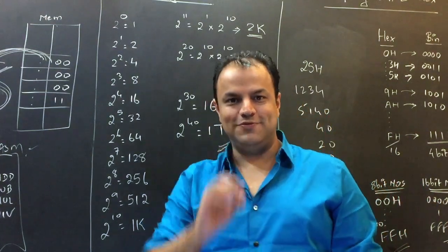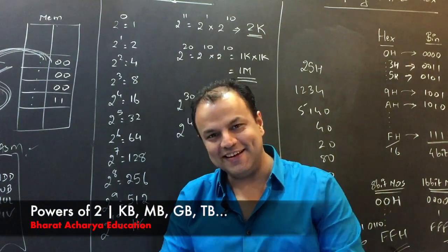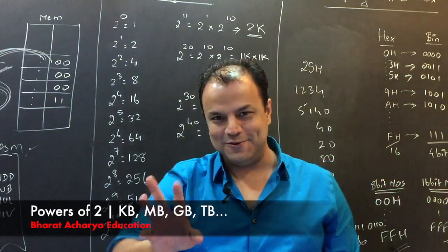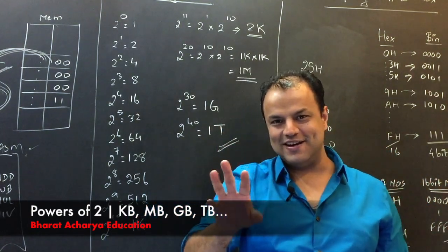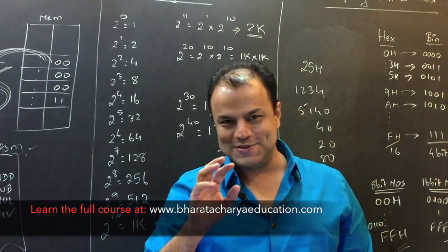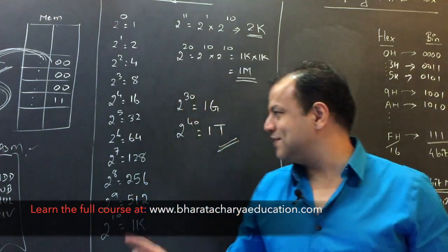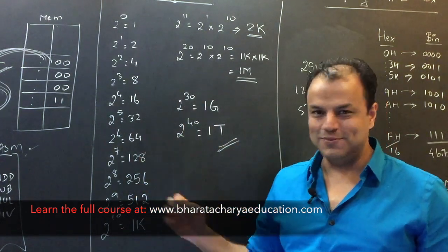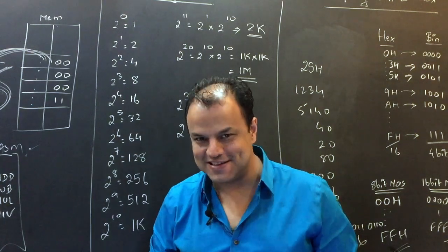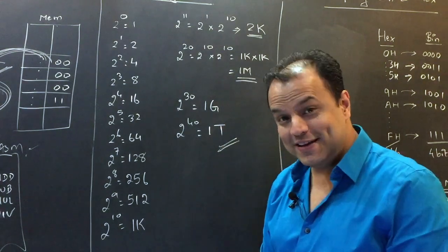Two raised to 12 is four K. Two raised to 13, eight K. Two raised to 16. If you learned a little bit of microprocessors here and there, you will now start coming across numbers that you've been seeing in the books all the time. Two raised to 16 is 64 K. You just have to tell me a K next to all these numbers. Two raised to 18, 256 K. Two raised to 19, 512 K.